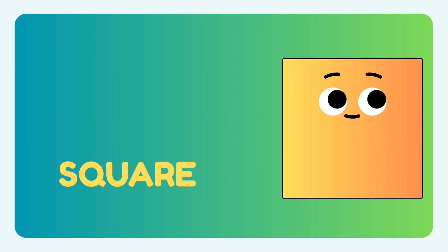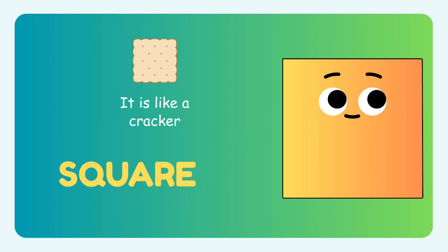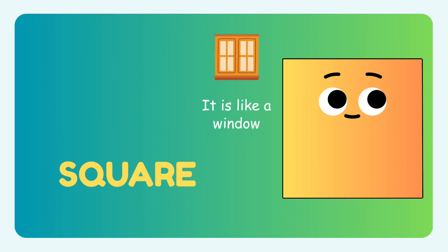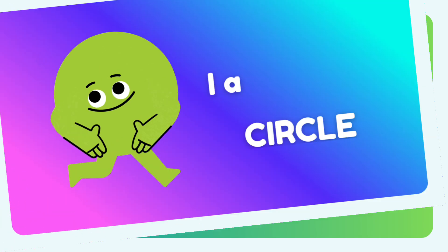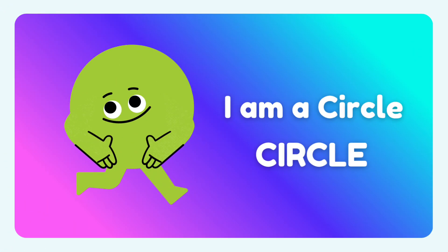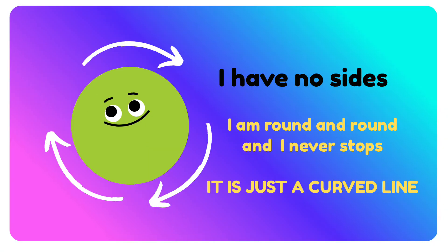You can find me anywhere around your surroundings, like a gift, like a cracker, and like a window. All these objects can be seen in the form of a square. I am a circle. I have no sides.